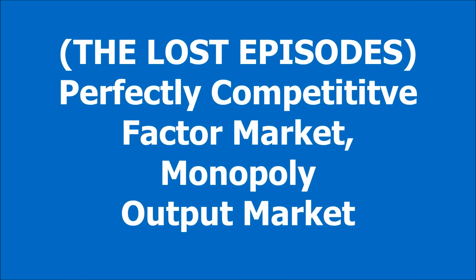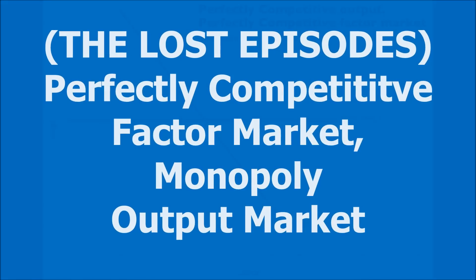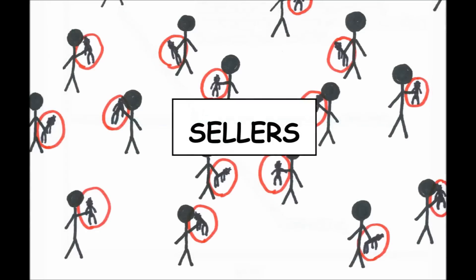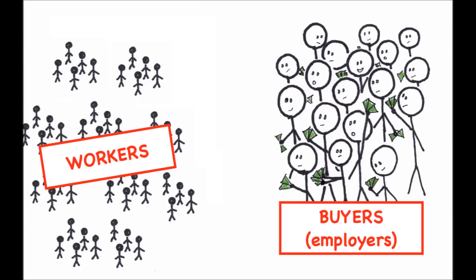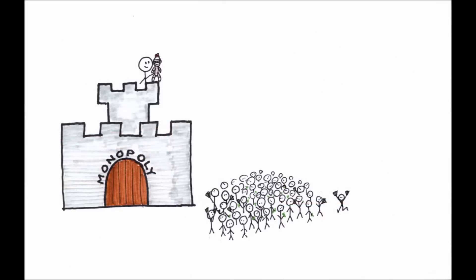From the previous episode, we covered a perfectly competitive factor market and perfectly competitive output market. We know that a perfectly competitive hirer of labor with a perfectly competitive output market involves a firm that is one of many in terms of the product it produces, but also one of many in trying to hire labor from an available pool. What if we have a firm that has a monopoly in the product market, but is still a perfectly competitive hirer of labor?